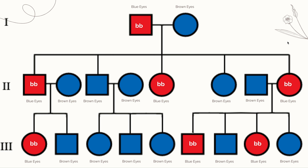Now that I have all of my blue-eyed individuals established, I know that blue eyes are recessive, so I can write that as two lowercase b's. With a recessive trait, the genotype is always going to be two recessive alleles. This is where recessive traits are really helpful when completing pedigree charts — because they have to have two recessive alleles, it's easy to know what the genotype is.